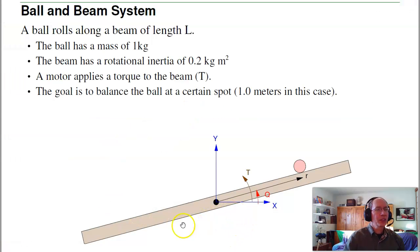On a beam at the origin, the beam has a rotational inertia of 0.2 kg·m². I've got a ball of mass one kilogram on the beam. When I apply a torque, it spins the beam counterclockwise. The displacement of the ball is r. The angle of the beam is called theta. The x and y are shown in blue.